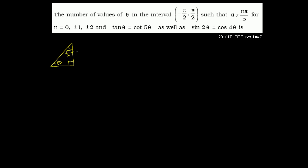Let's draw a right triangle. Let's call that angle theta. Then this angle right over here is going to be pi over 2 minus theta, since we're in radians. The right angle here is pi over 2. The whole triangle is 180 degrees, which is pi. So this is pi over 2, and these two other angles have to add up to the remaining pi over 2, making this angle pi over 2 minus theta.